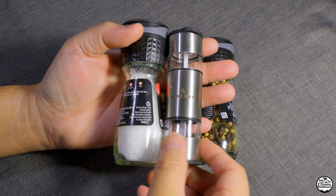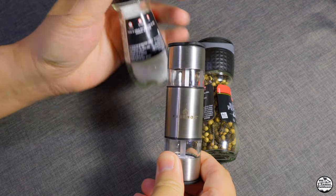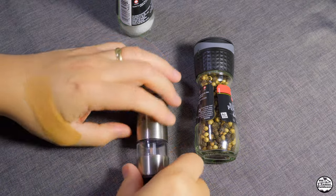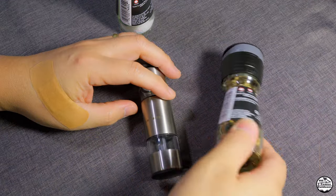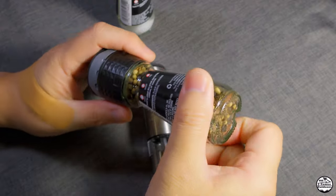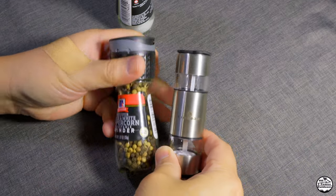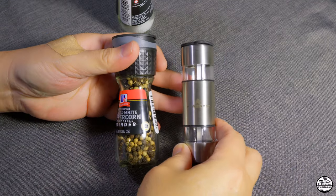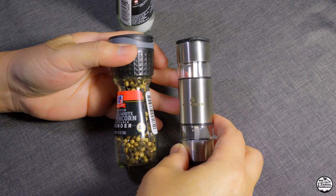Here's some specs. The micro grinder only weighs 2.8 ounces empty, with a length of 4 and 3 eighths inches or roughly about 11.11 centimeters, and also a width of 1 and 1 quarter inches or 3.2 centimeters.